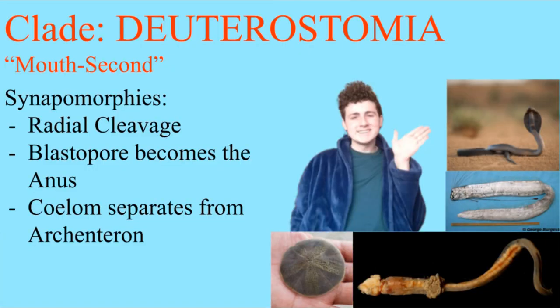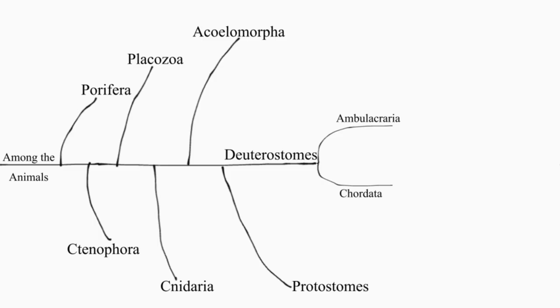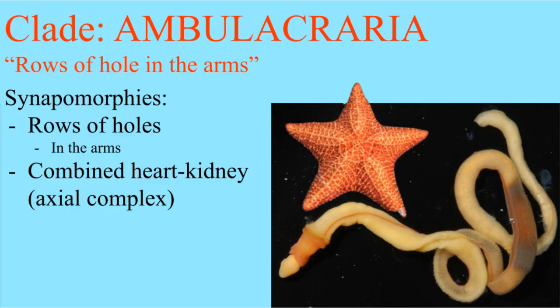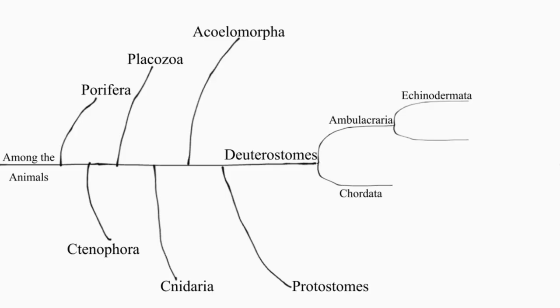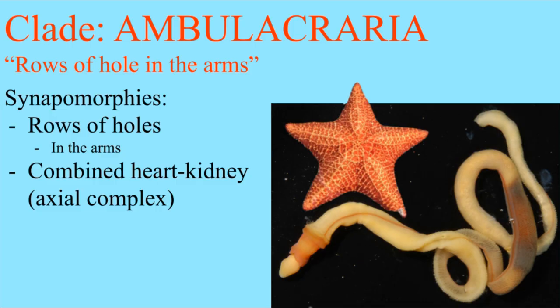Deuterostomes, on the other hand, are divided into the guys with holes in their arms and the guys with string in their back. The ambulacraria are further divided into the hedgehog skinned and the half strings. All ambulacrarians further share the fact that they have a combined heart-kidney that pumps out excrement.